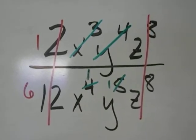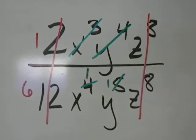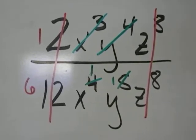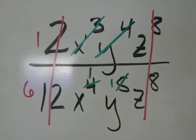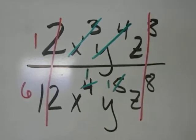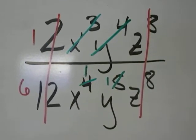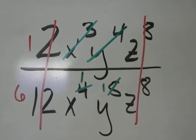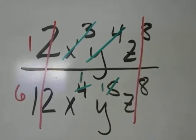3 minus 4 is negative 1, meaning that your x's will be left over in the denominator with an exponent of 1. 4 minus 5 is also negative 1. That means your y's, you'll have one left over, but it's also going to have to move to the basement. 8 minus 8 is 0. There won't be any z's left at all.